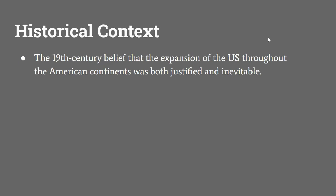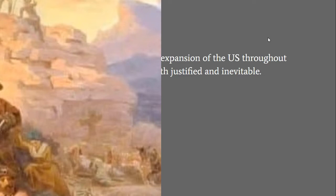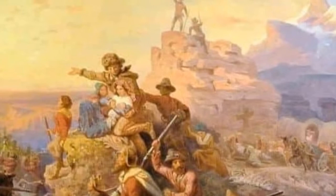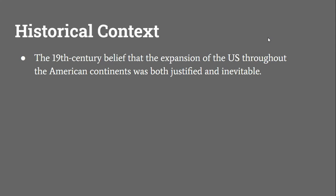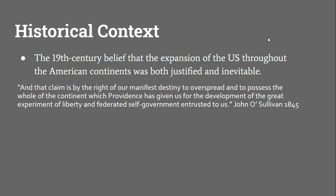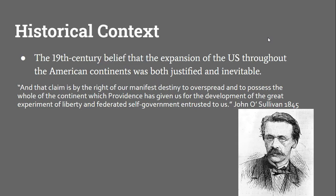First, some really broad historical context. Manifest Destiny is the belief that the expansion of the United States through the American continent was both justified and inevitable. American settlers and politicians of the time argued that they were spreading civilization across the continent. The term Manifest Destiny itself was coined by John O'Sullivan in his magazine The Democratic Review: 'and that claim is by the right of our Manifest Destiny to overspread and to possess the whole of the continent which Providence has given us for the development of the great experiment of liberty and federated self-government entrusted to us.'